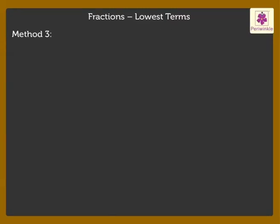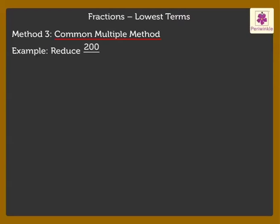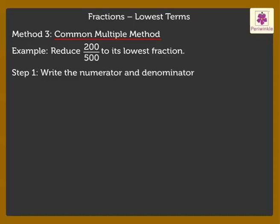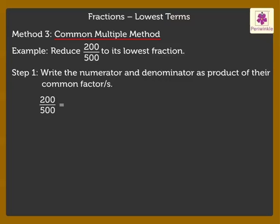Method 3: Common Multiple Method. Reduce 200 upon 500 to its lowest fraction. Step 1: Write the numerator and denominator as the product of their common factor or factors. Thus, 200 upon 500 can be written as 2 into 100 upon 5 into 100.